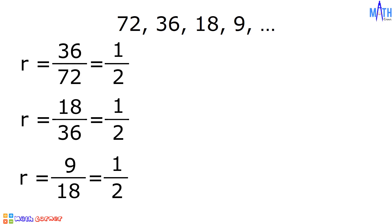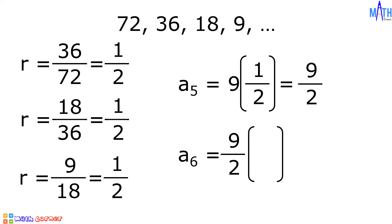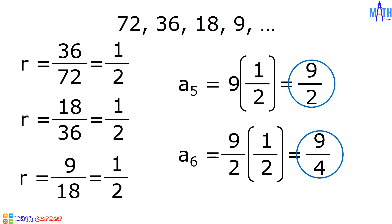Let us determine the next two terms. To determine the fifth term, we multiply the fourth term and the common ratio: 9 times 1 half equals 9 halves. To determine the sixth term, we multiply the fifth term and the common ratio: 9 halves times 1 half equals 9 fourths. The next two terms are 9 halves and 9 fourths.